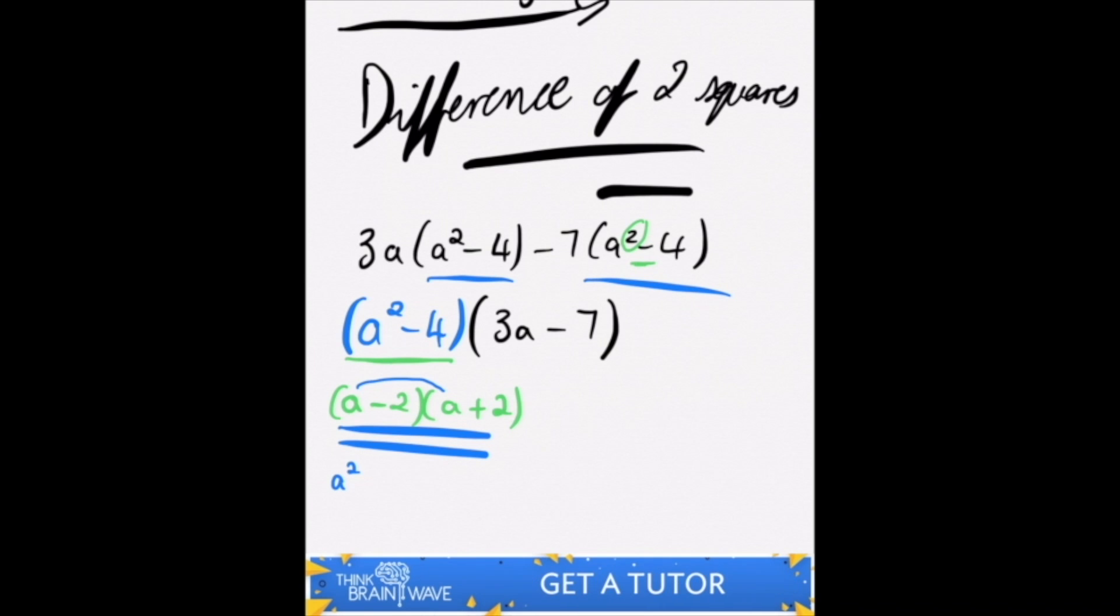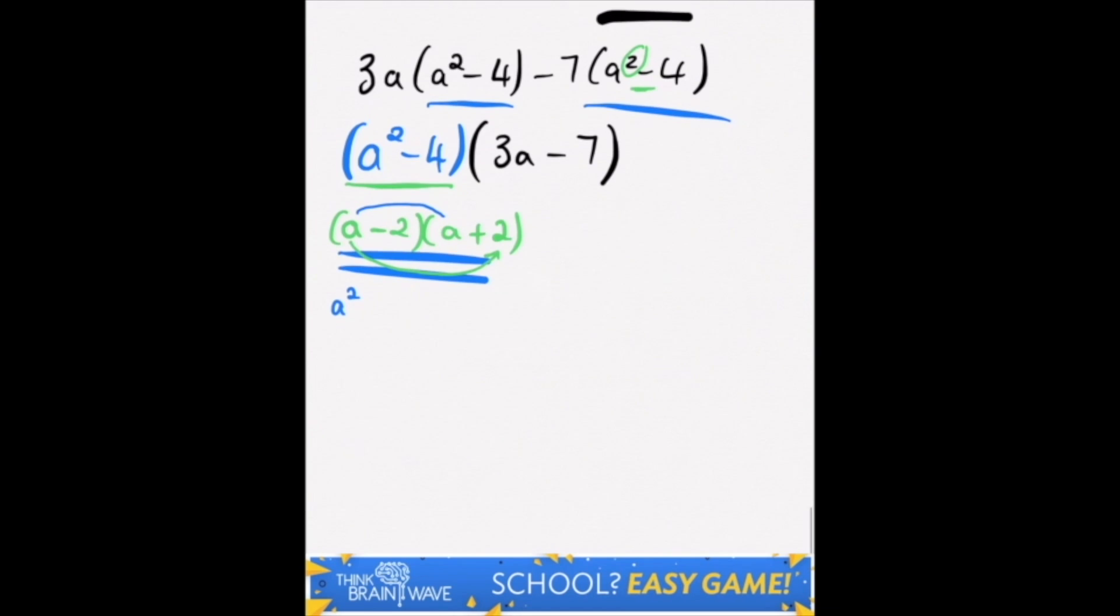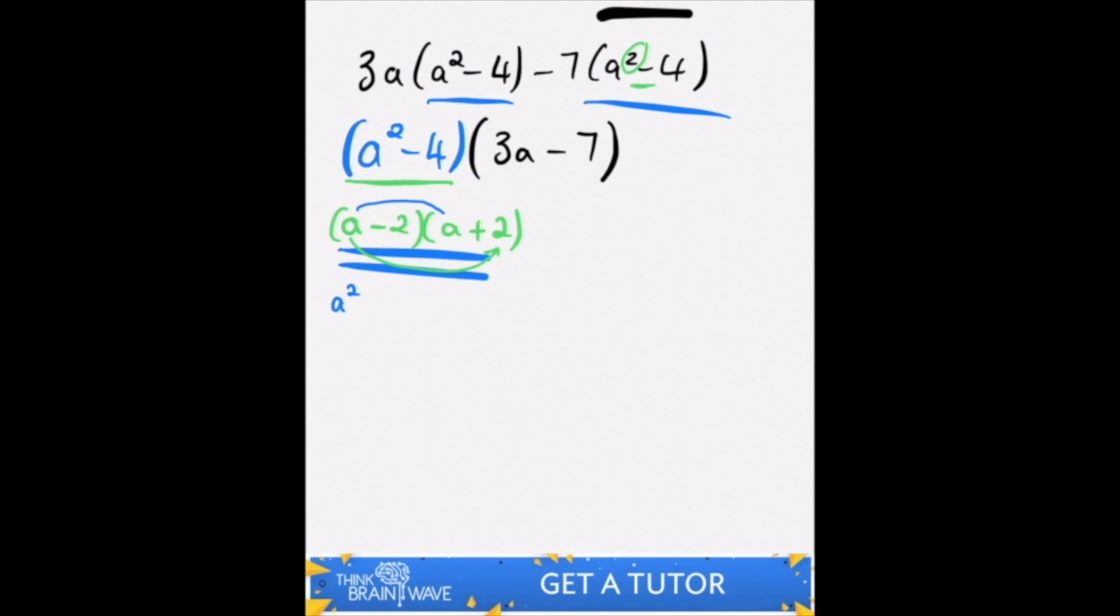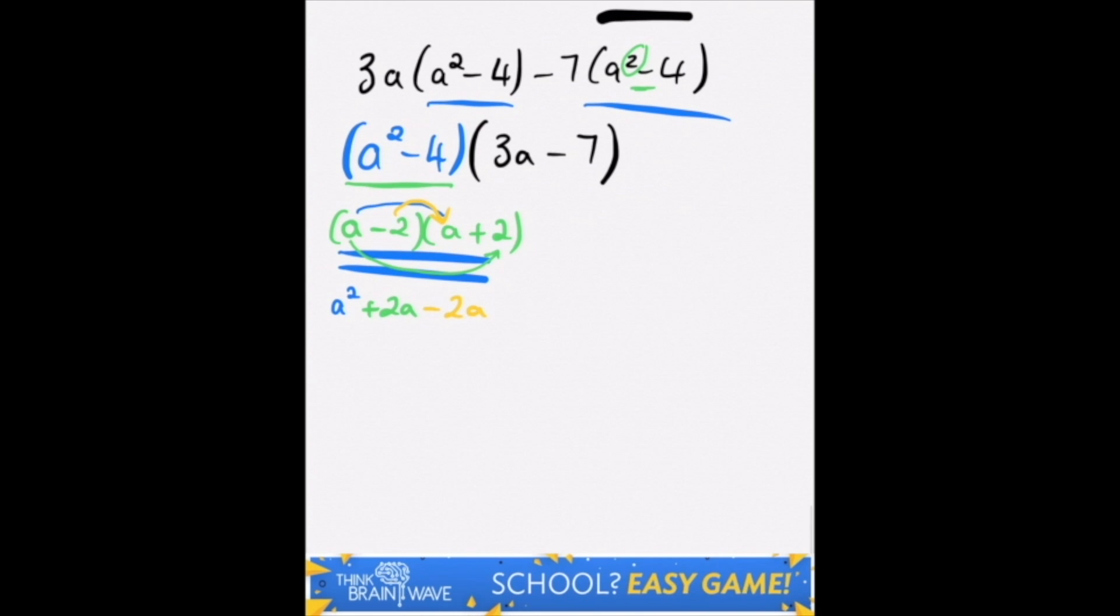Here you have, by FOIL, you have the first which is a times a, making a squared. Your outers, which is a times 2, making plus 2a. Your inners, minus 2 times a, giving you minus 2a. And your last, minus 2 times plus 2, makes minus 4. You then cancel or group like terms, so plus 2a and minus 2a cancel each other out, leaving a squared minus 4.